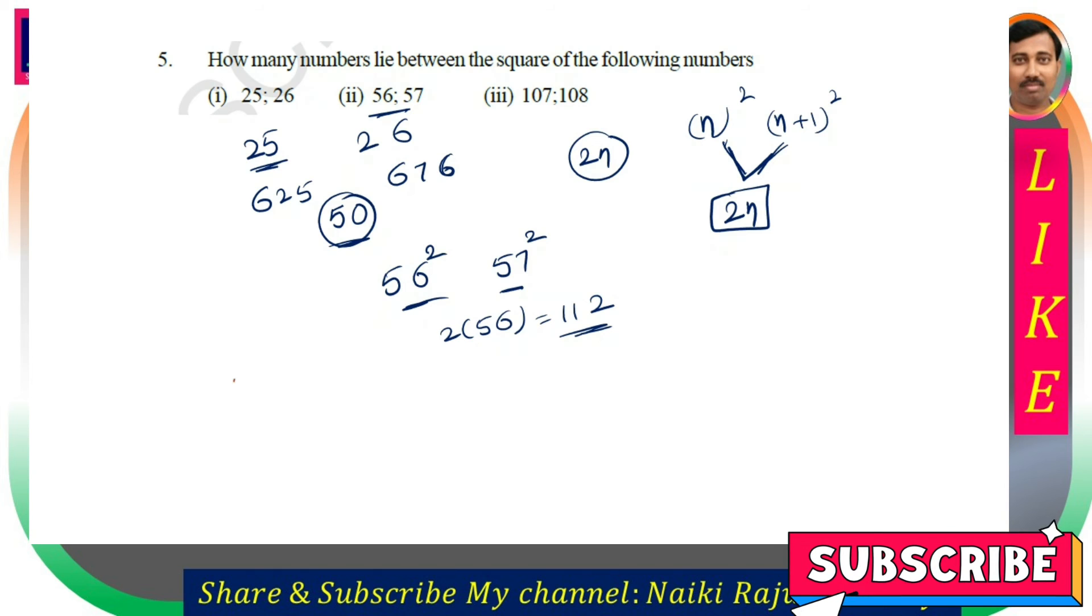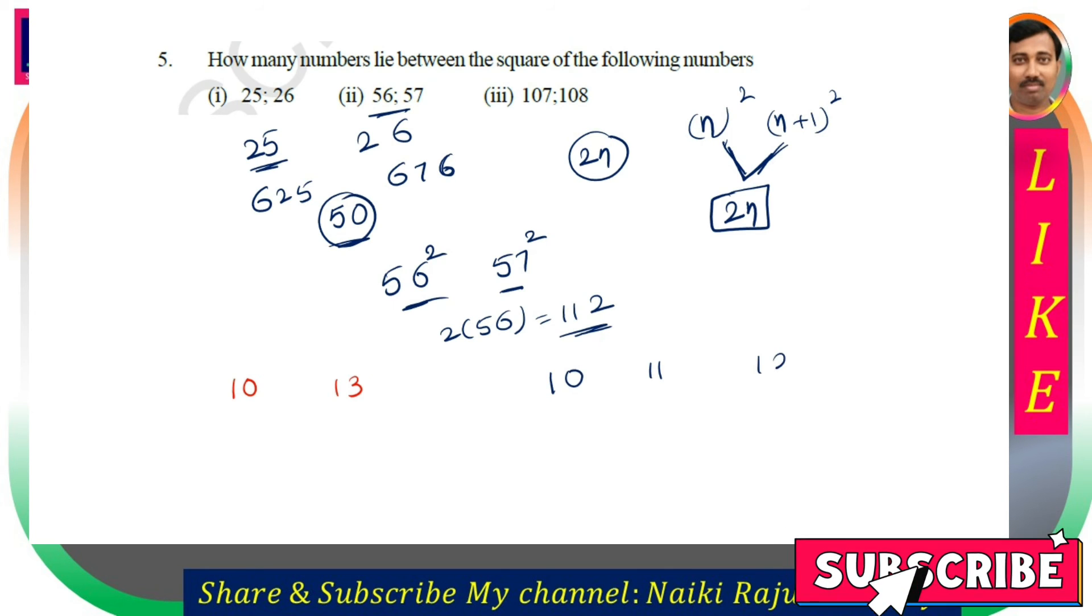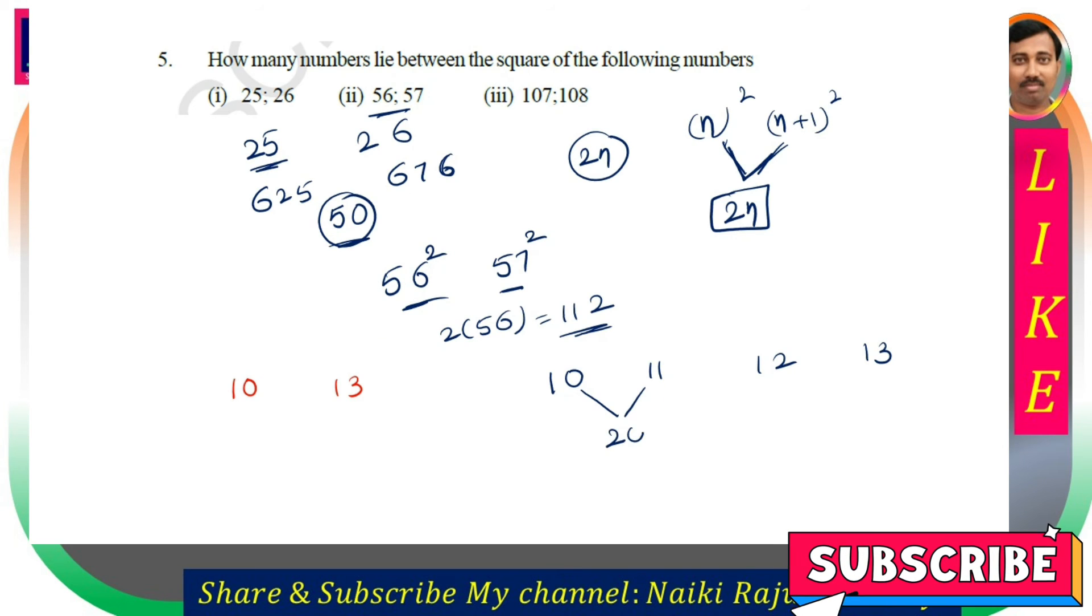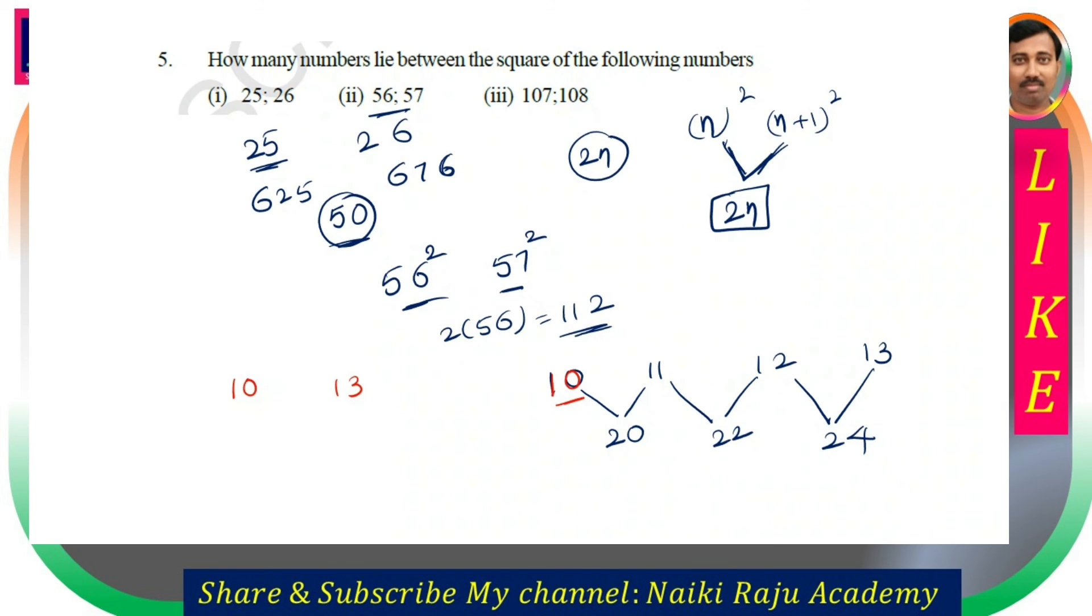For 10 and 13, these are not consecutive numbers. Between 10 and 13, we need to find: between 10 and 11 there are 20, between 11 and 12 there are 22, between 12 and 13 there are 24. Total is 20 plus 22 plus 24 equals 66. So 66 is the answer when the numbers are not consecutive.